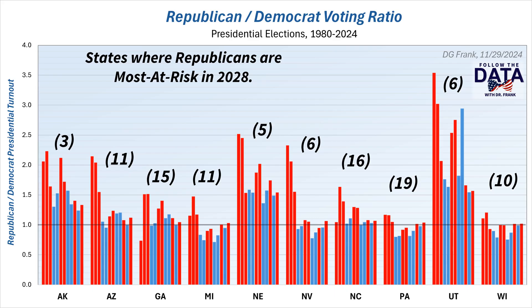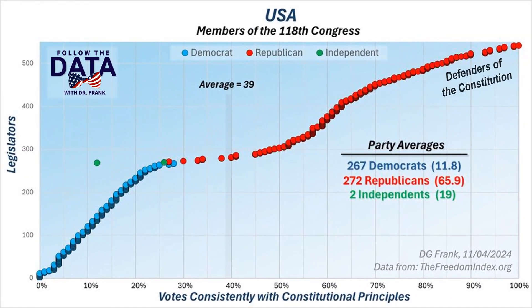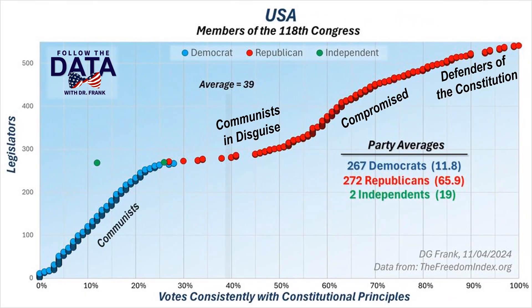Midterm elections typically trend opposite to the party that won the presidency in the general election. Given this historic fact, and the trends I've just shown, Republicans are likely to lose control of the House in 2026, just like they did in 2018. Historically speaking, the 2022 midterms should have favored the Republicans, but their red wave never materialized, and they barely squeaked out an ineffective majority. I say ineffective because many of the so-called Republicans in Congress don't honor their oaths of office and defend the Constitution. I've prepared graphs like this for every state legislature in the country, and they don't look much better. I'll discuss those graphs in another upcoming presentation.